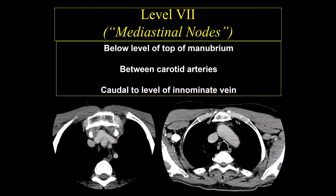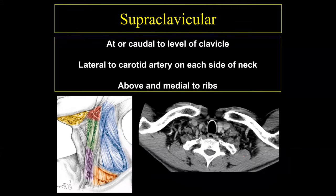The level 7 lymph nodes are the mediastinal lymph nodes, running from the top of the manubrium between the carotid arteries down to the innominate vein. These are mediastinal lymph nodes — I like to defer these to the chest radiologist, but because imaging studies go down into the upper mediastinum, we as head-and-neck radiologists are responsible for these. They are included in the classification for cervical lymph nodes.